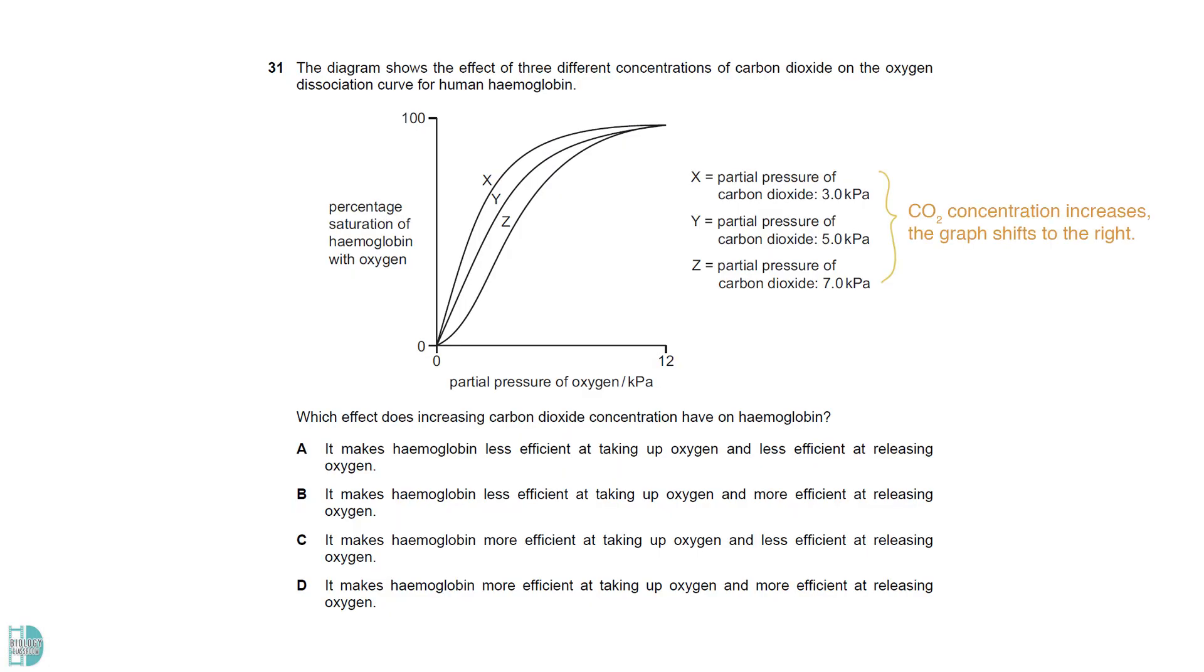As carbon dioxide concentration increases, the graph shifts to the right. This means at the same partial pressure of oxygen, hemoglobin has a lower percentage saturation, indicating a lower affinity. The release of oxygen is more favorable than the binding.